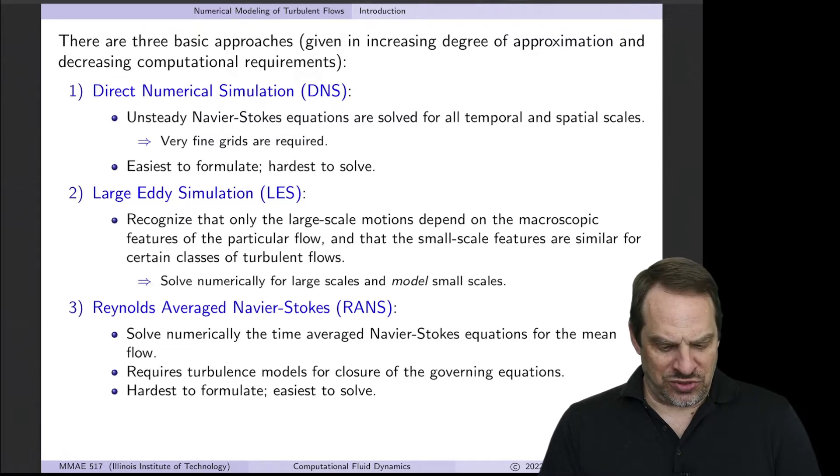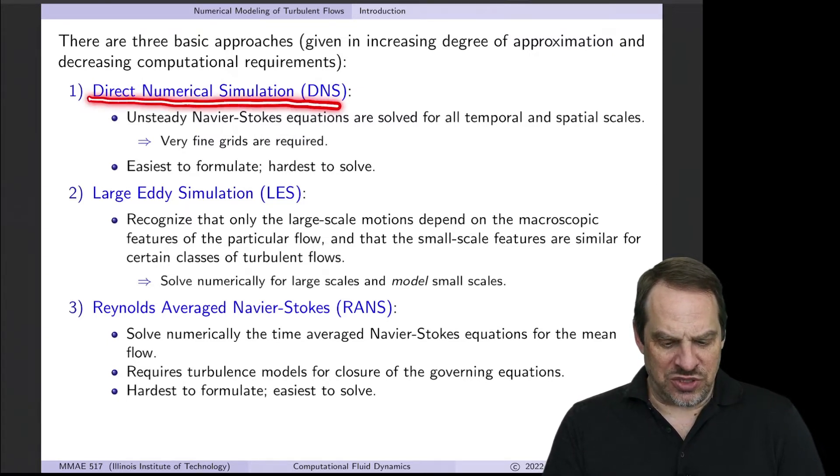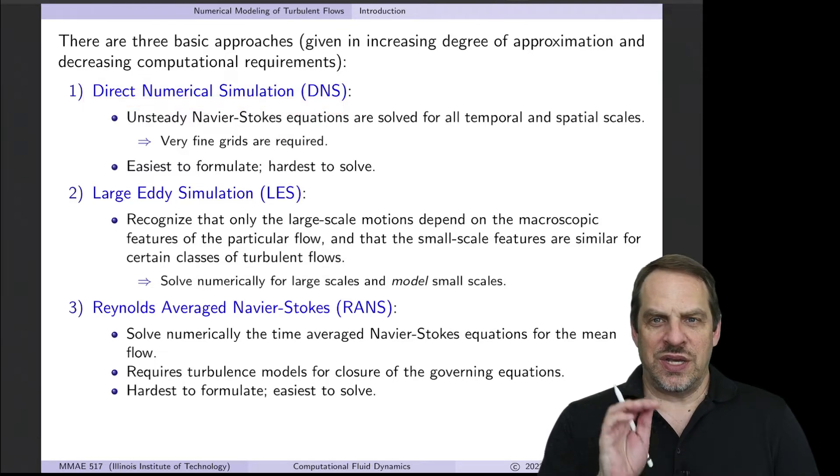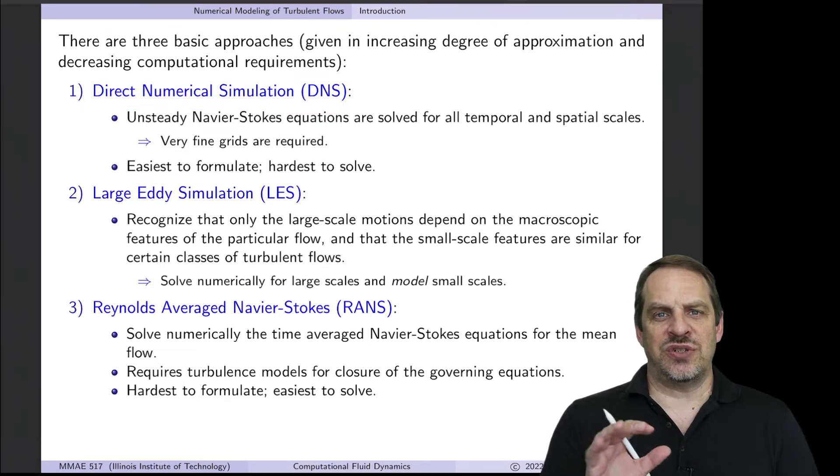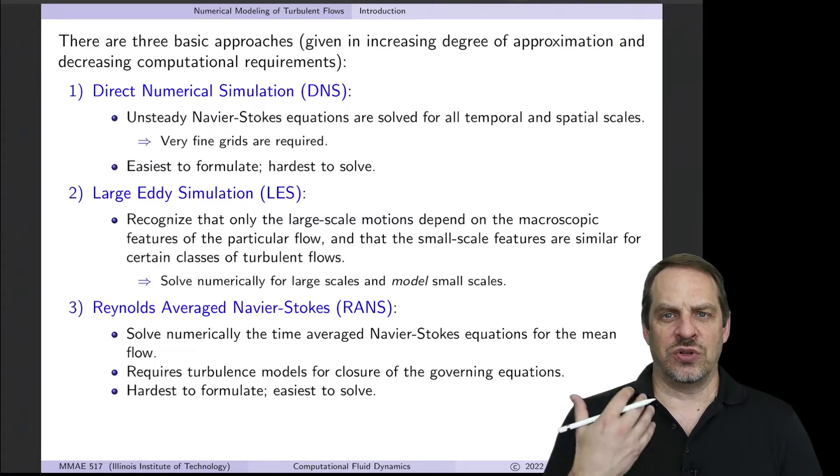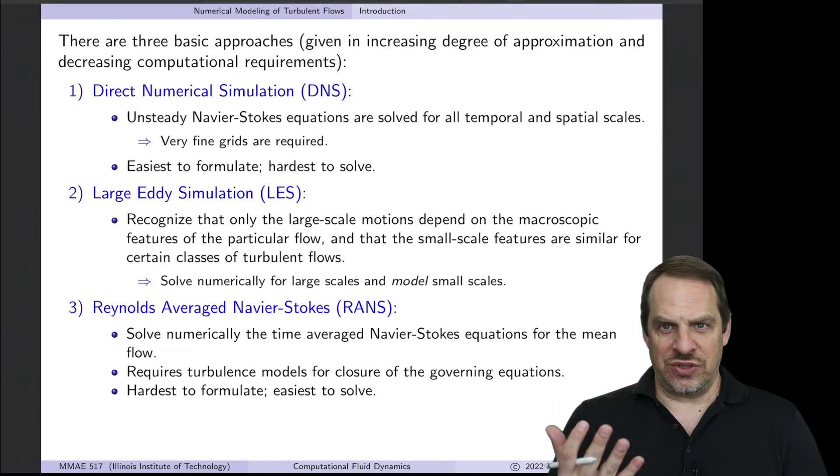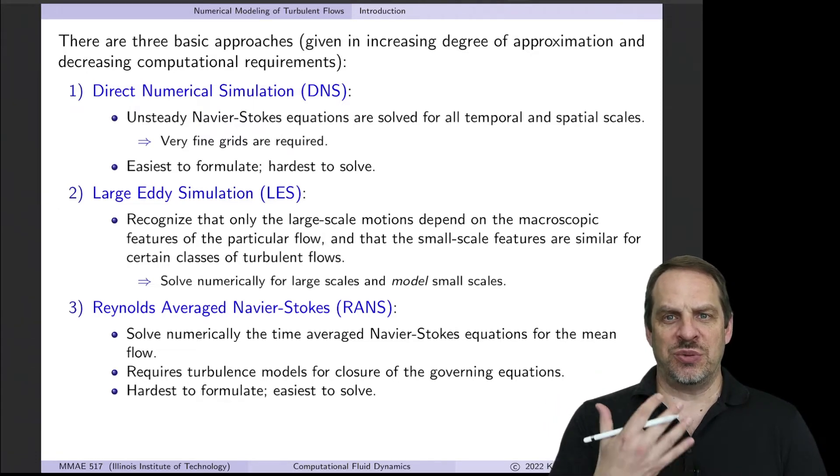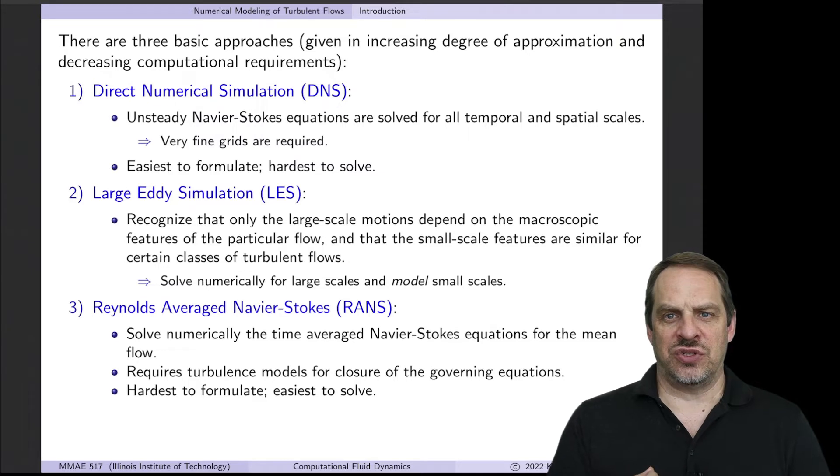So the three approaches are as follows. Direct numerical simulation, or DNS. The idea here is that the Navier-Stokes equations that we've been looking at, the 3D unsteady versions, actually account for all of the physics necessary for turbulence. So again, it's not a stochastic process, it's a deterministic process governed by the Navier-Stokes equations.